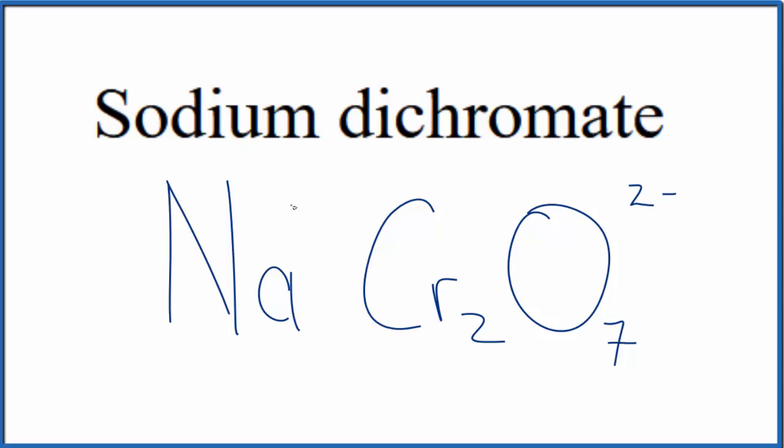Sodium is in group 1 on the periodic table. It'll be 1+. We said the whole dichromate ion here is 2-. So we need these charges to balance. This is a neutral compound. It doesn't say ion after it.